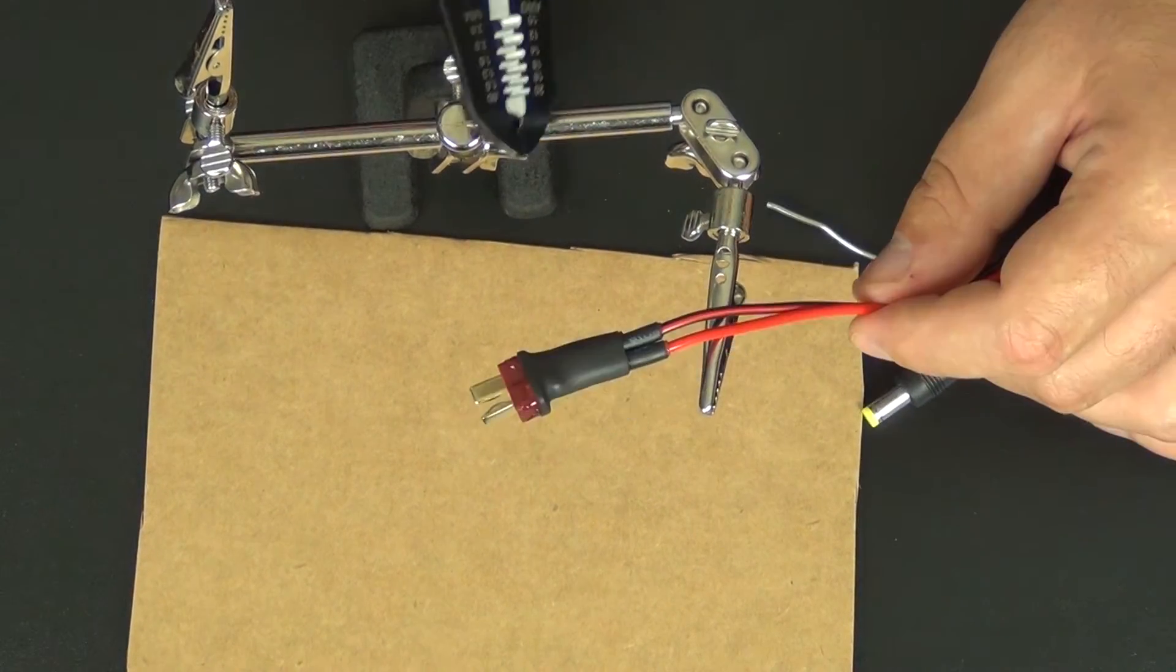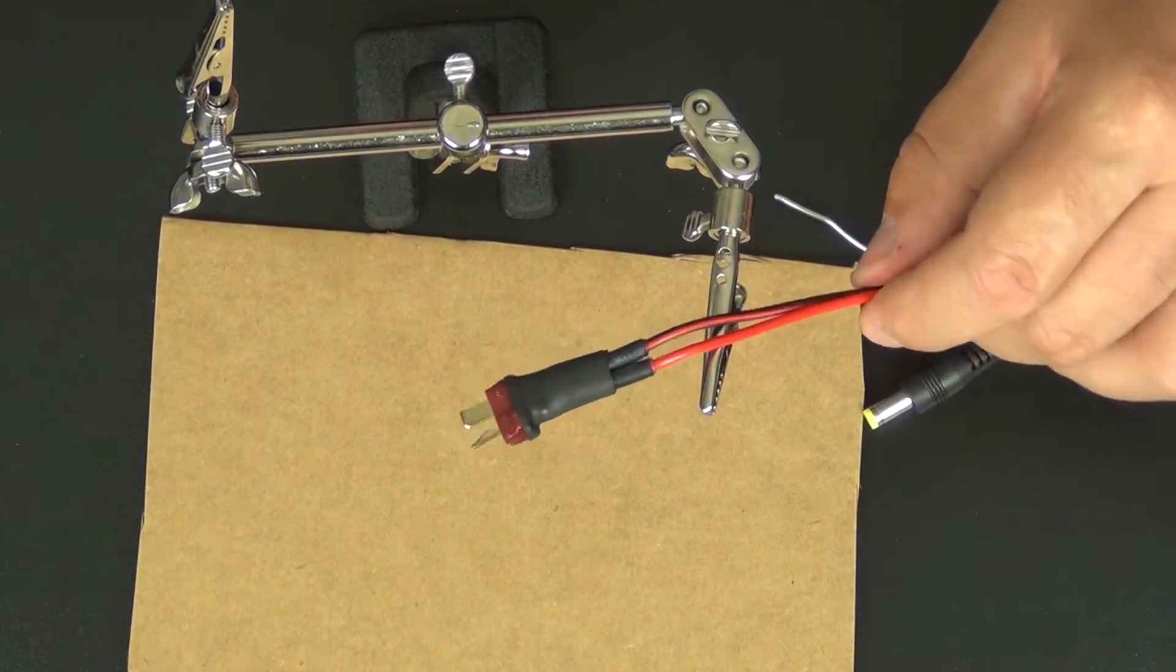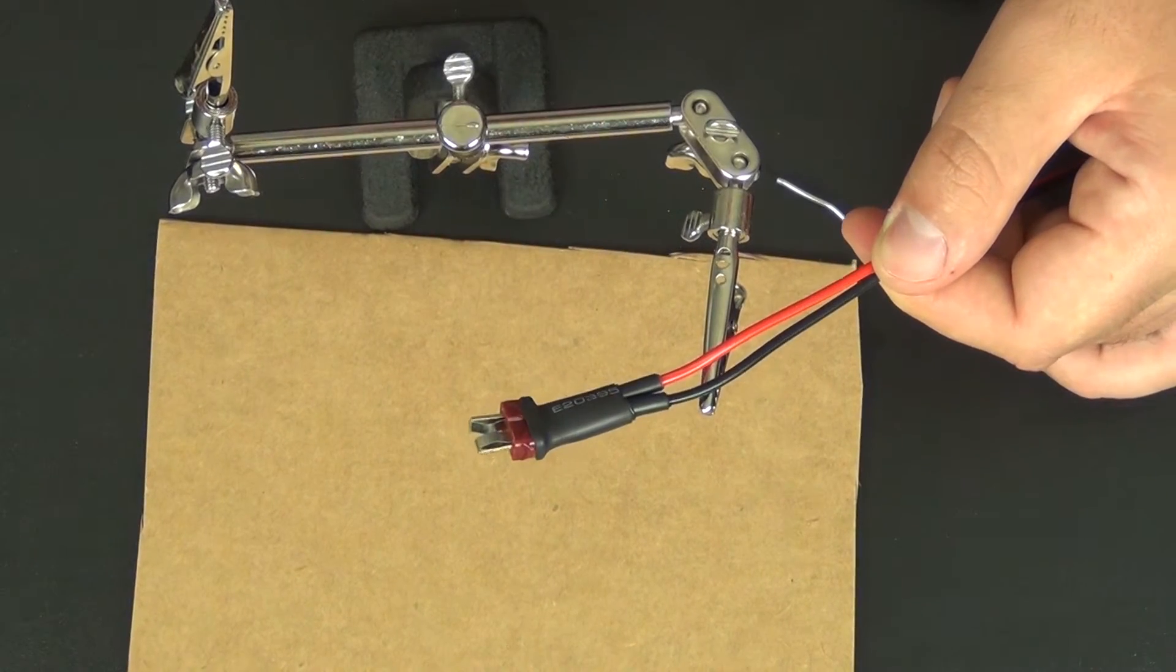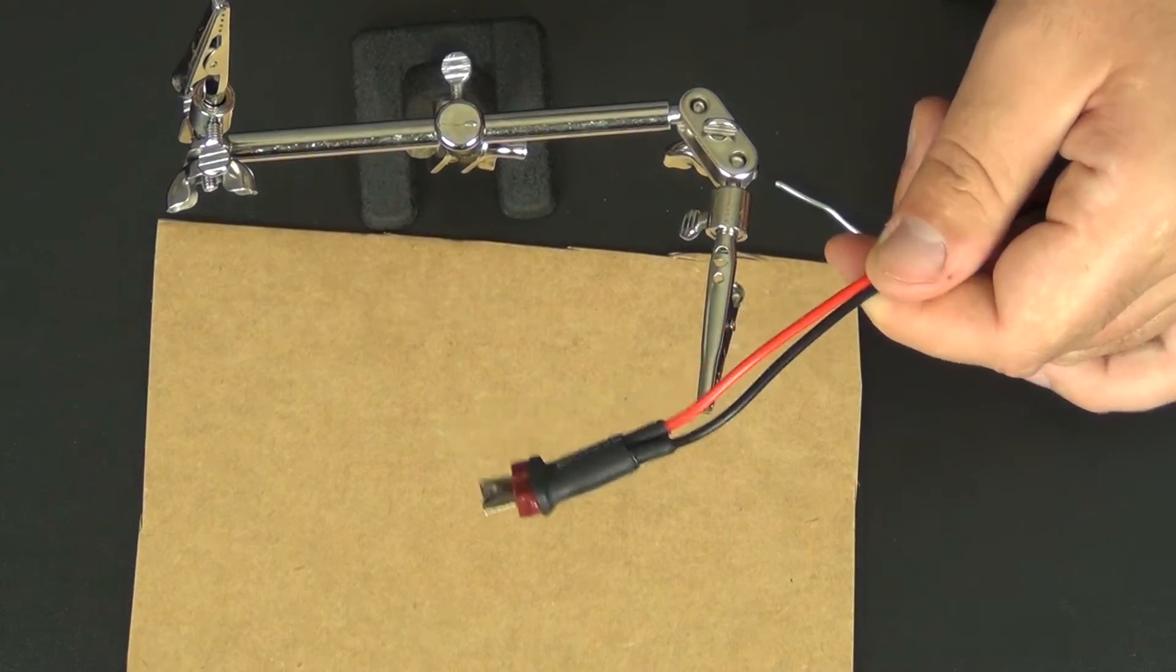And that worked great. You can see some of the glue popping out from the marine heat shrink. So that's a good thing. It means it's all sealed up and a nice good connection. So I'm going to let this cool.